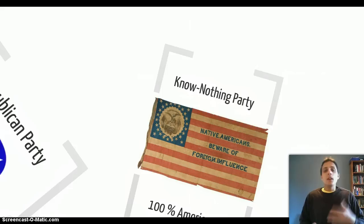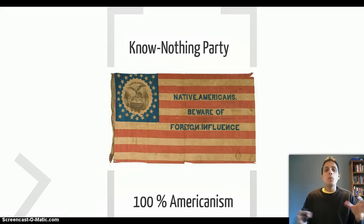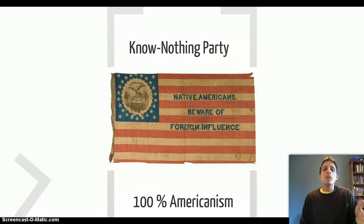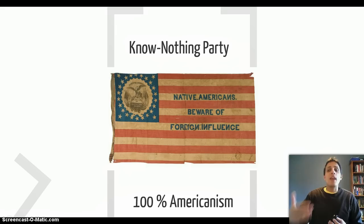The next party to jump onto the scene is the Know Nothing Party, which we've talked about a little when we discussed Irish immigration. Their big issue is immigration — they are very anti-immigrant. Like a lot of third parties, they don't usually stick around and become big national parties, but they introduce an important issue that may get adopted by bigger parties. The Know Nothings have an anti-immigrant, anti-Catholic stance, and their belief is America for Americans only — meaning people who can trace their descendants back to the original English settlers. They have this idea of 100% Americanism, with strong religious overtones of Protestantism versus Catholicism, and they are very anti-Catholic and anti-Irish and in some cases anti-German immigrant.